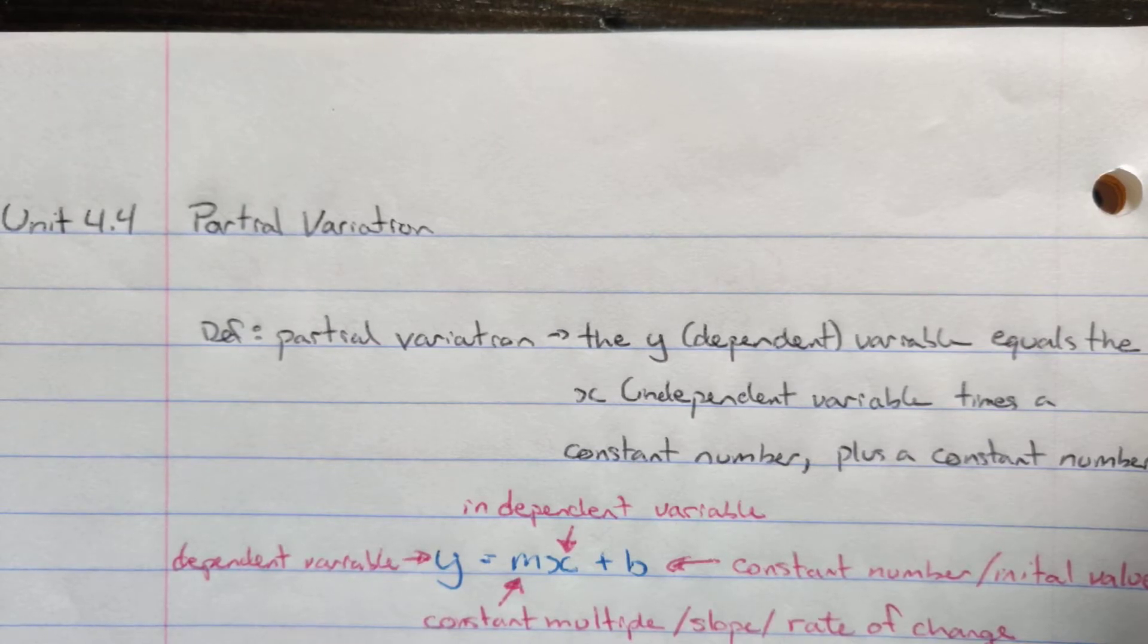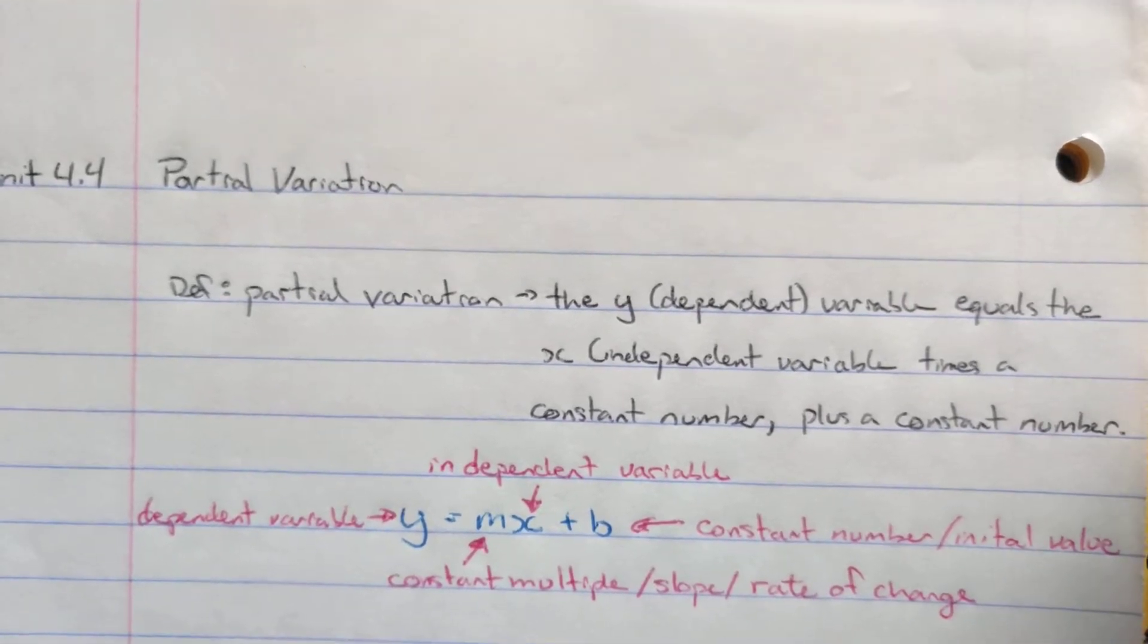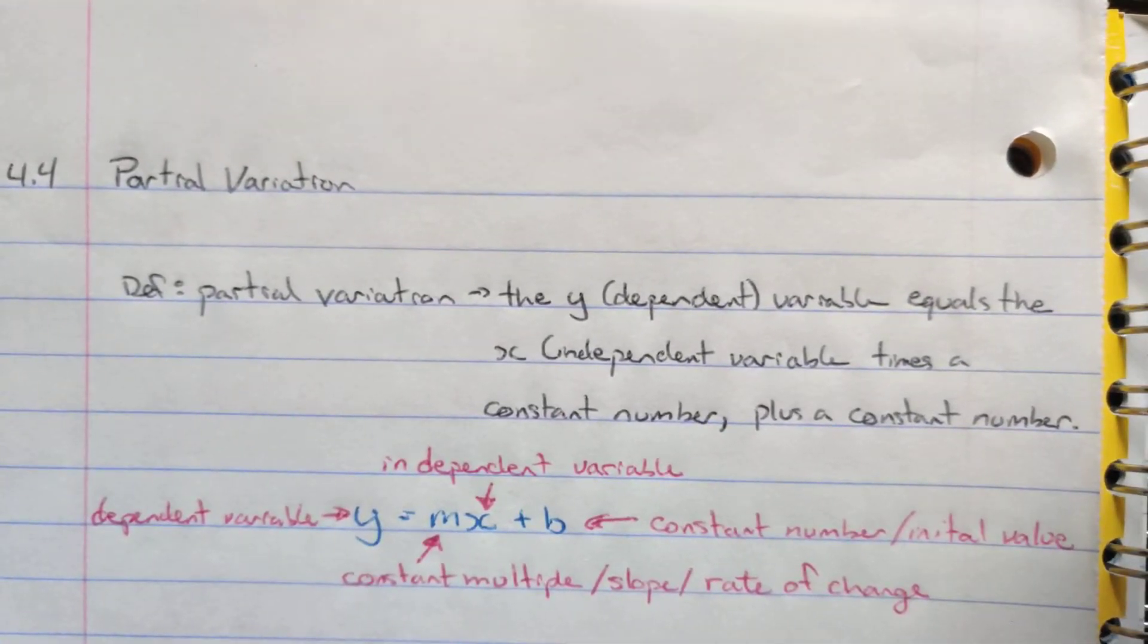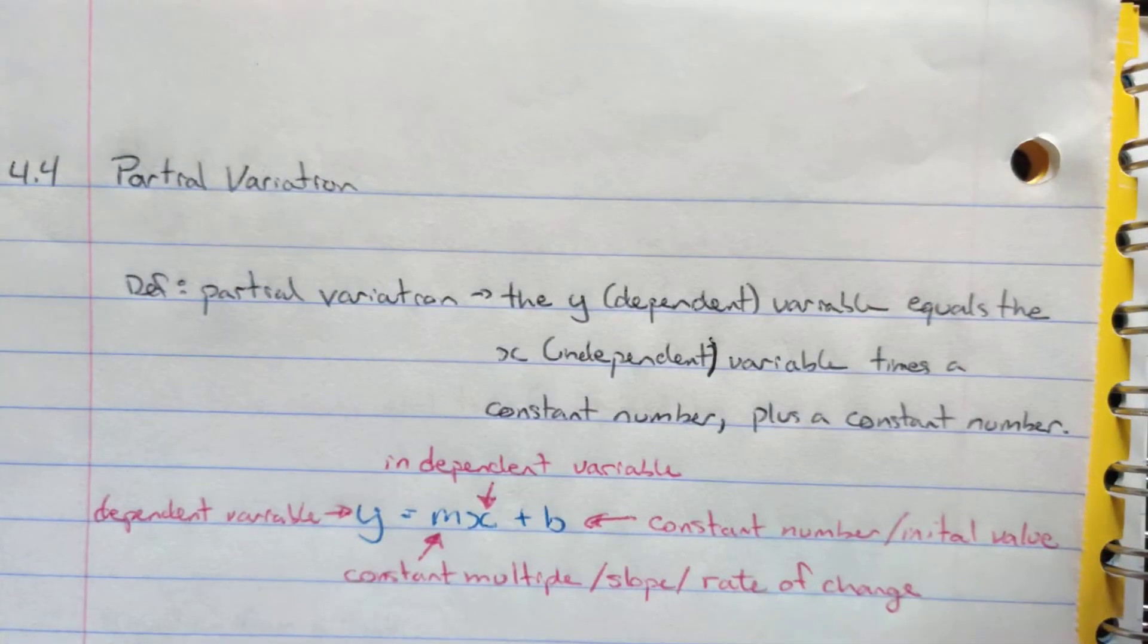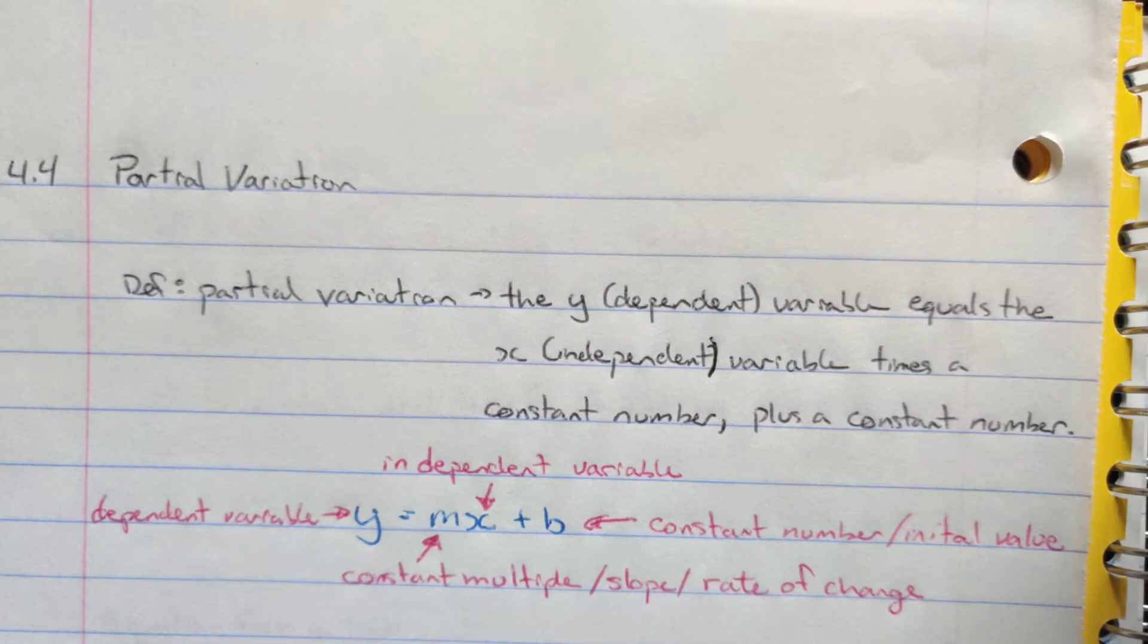In this case, we're going to be looking at partial variation. So it's very similar. But the y-dependent variable equals the x-variable, the independent variable (I believe there's a missing bracket right there), times a constant number.